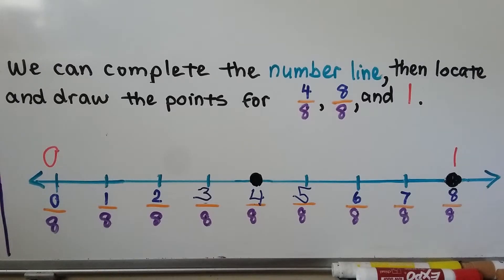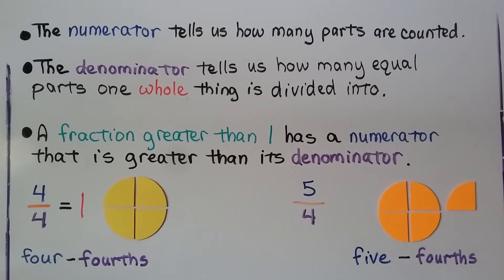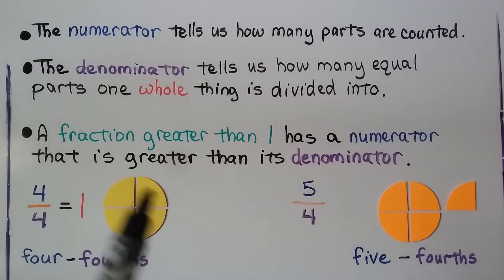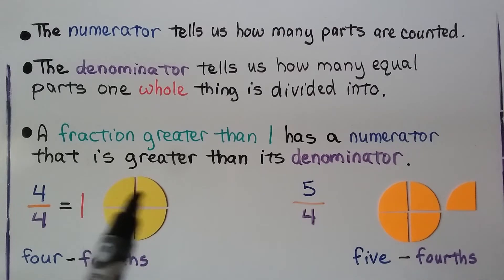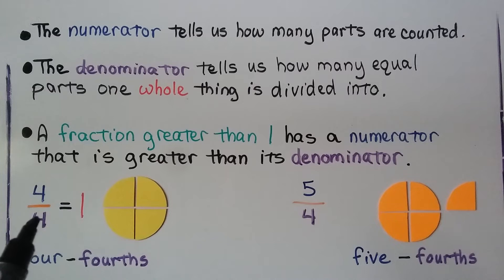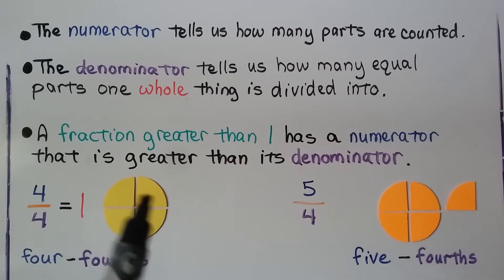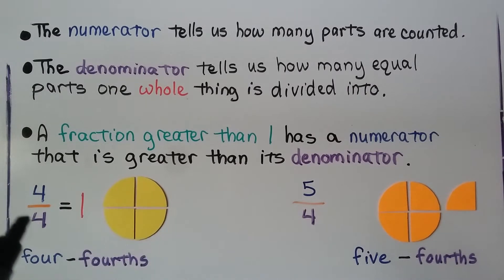If two numbers are located at the same point on a number line, they're equal and represent the same distance from zero. The numerator tells us how many parts are counted or how many are shaded, and the denominator tells us how many equal parts one whole thing is divided into. We have a whole circle divided into four parts, so our denominator is four. We have all four parts, so we have four-fourths — one whole circle.